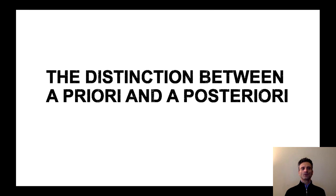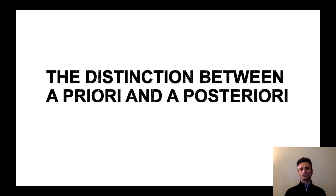Now, what is the distinction between a priori and a posteriori? Don't get scared — these are Latin words. A priori means 'prior to,' prior to experience. What can you know prior to experience? A posteriori means 'through experience.' Let me give you some examples: 'all bachelors are unmarried men' and 'some bachelors are happy.' We know that these two statements are true, but how do we know that they are true?